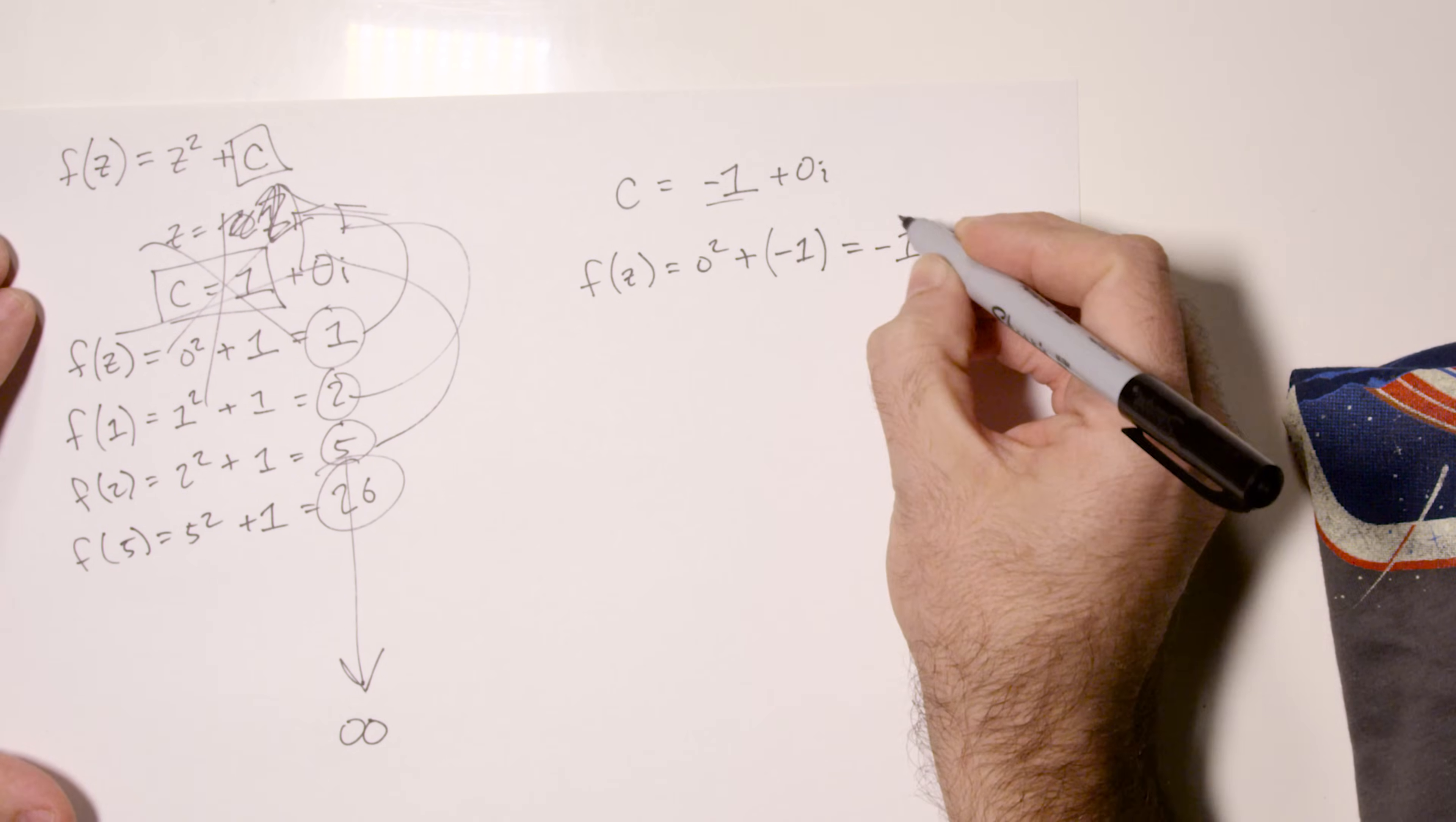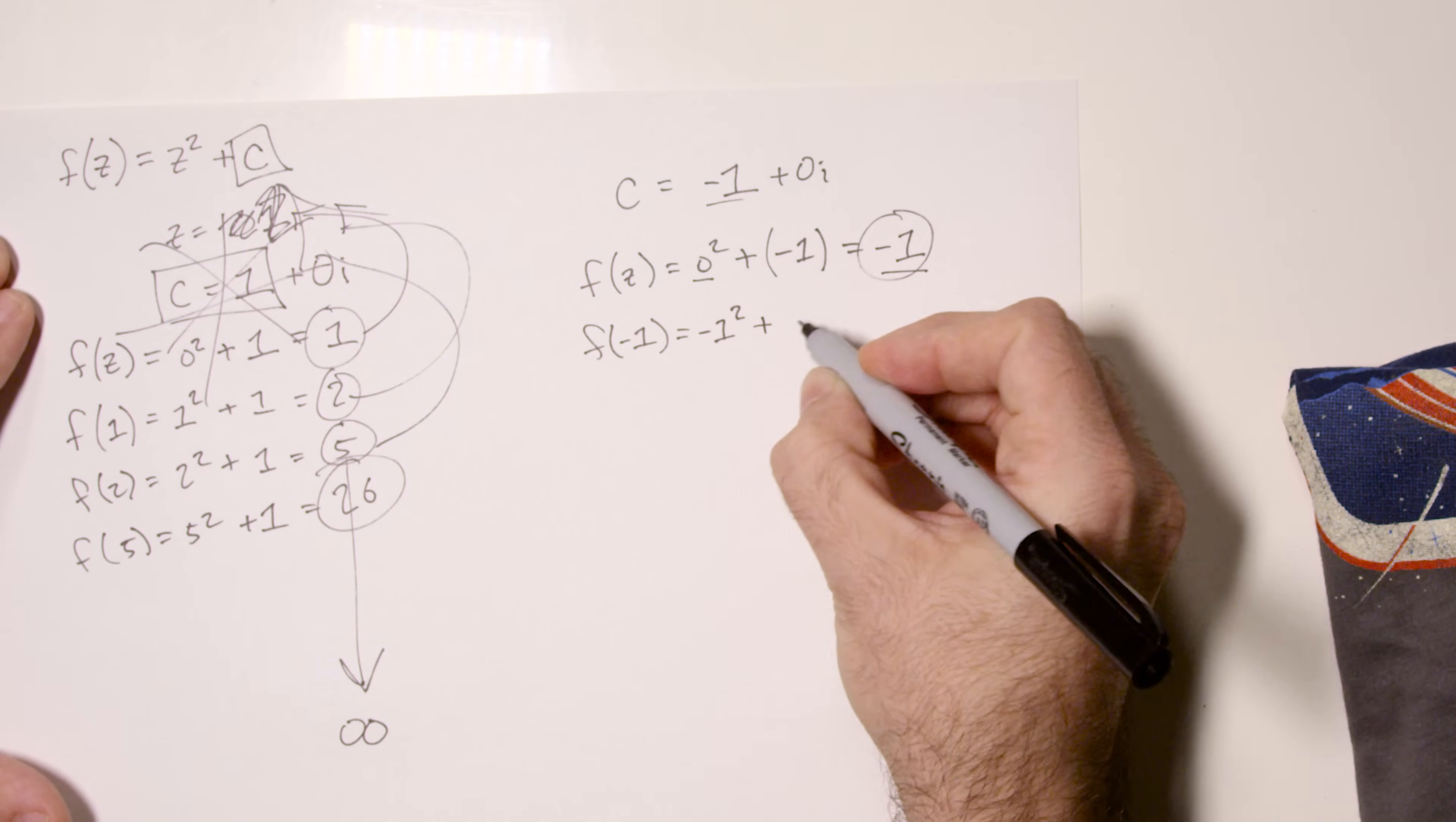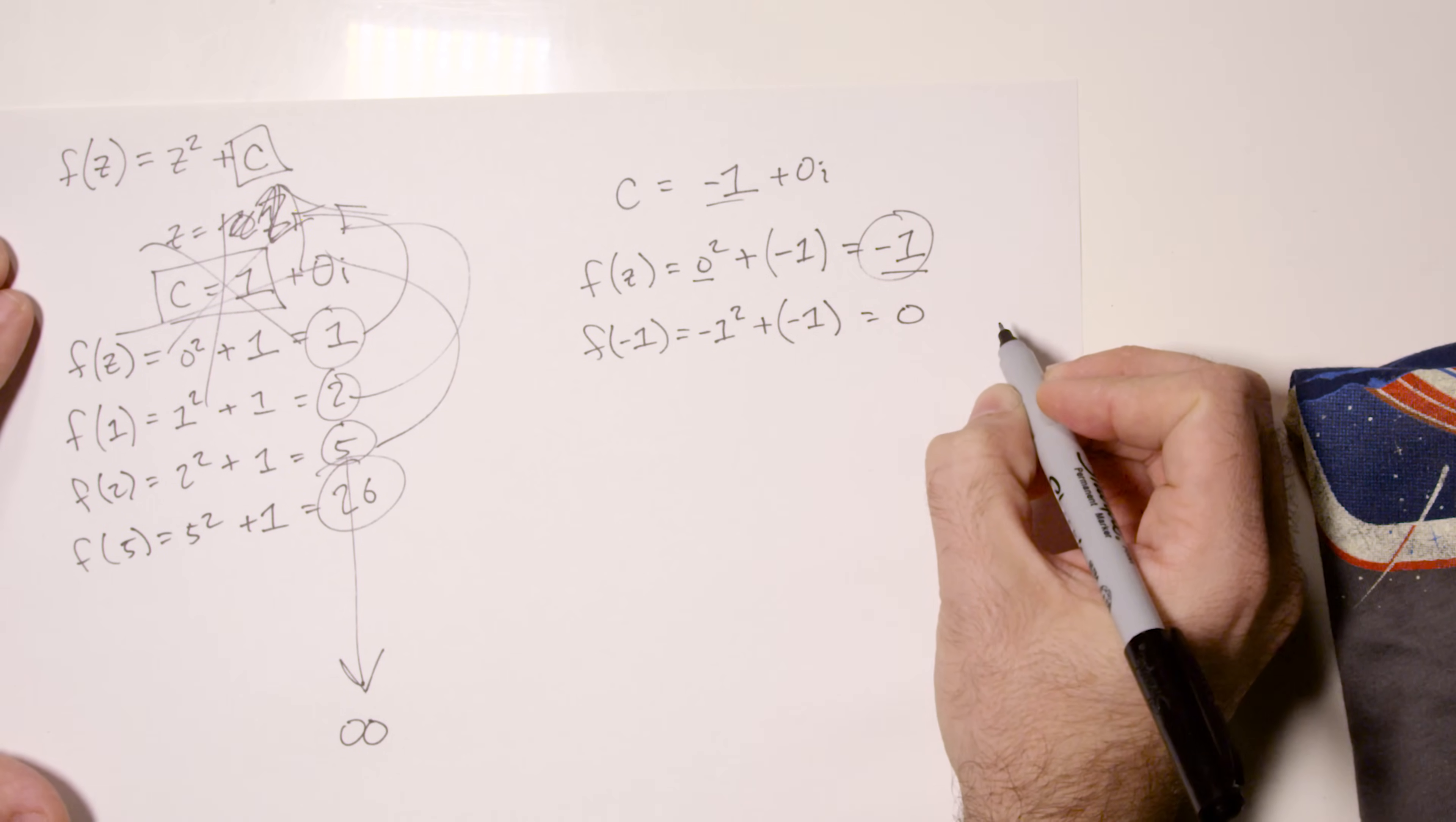Okay, so now our new value of z is negative one. It originally was zero, now it's negative one. So what is f of negative one? Well, it is negative one squared, since we need to do z squared. And then we need to, of course, add c, which is in this case still negative one. Negative one squared is one plus negative one. One minus one equals zero. Uh-oh.